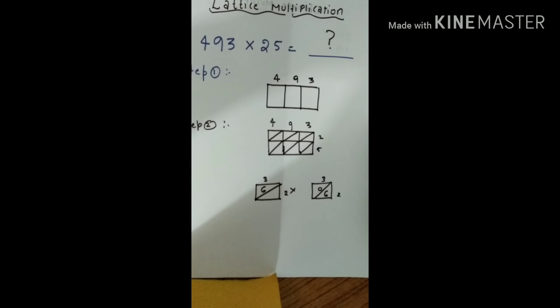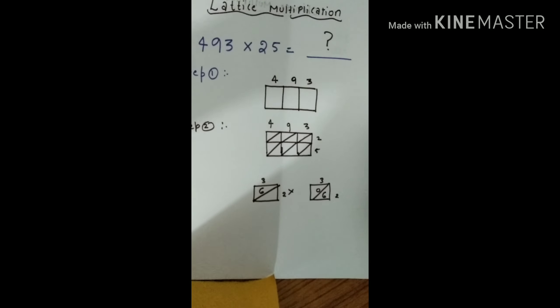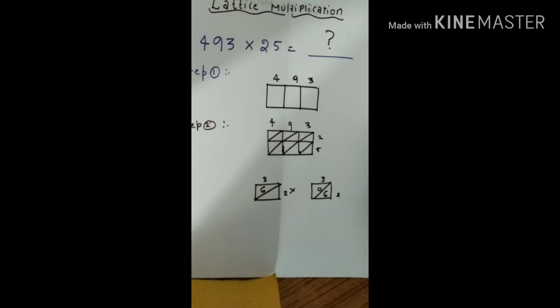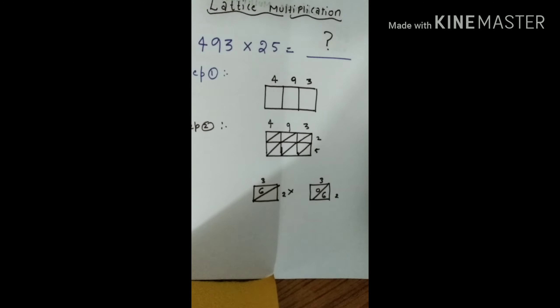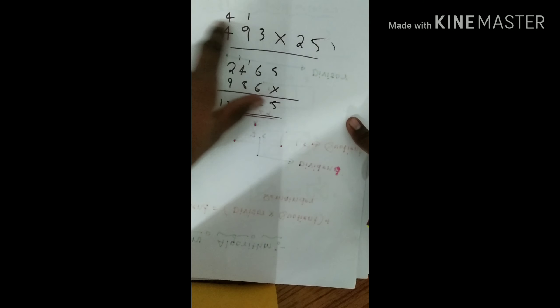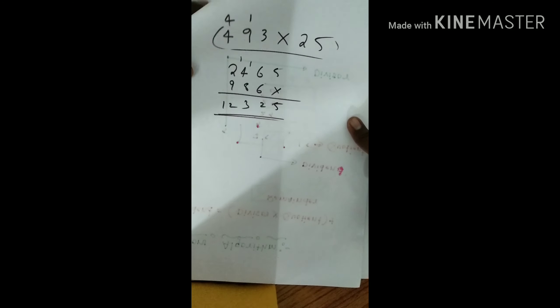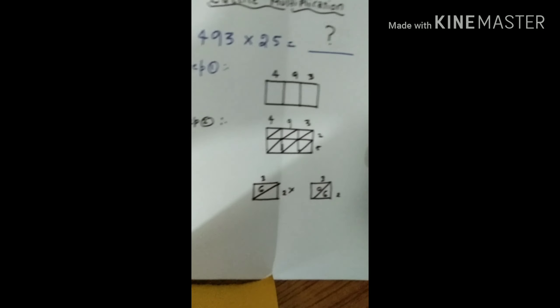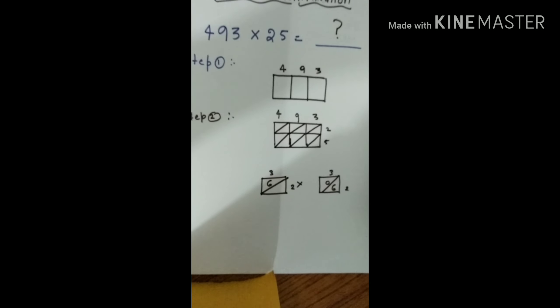Hi guys, welcome to my channel. In this session I will be teaching you lattice multiplication. Here we have one question: 493 times 25. Normally people will go for this method - they multiply 2 and 5, they'll add, and so on. This is a quite easy method I have seen.